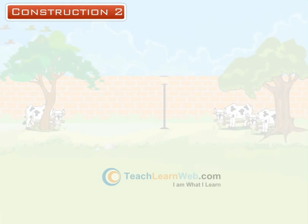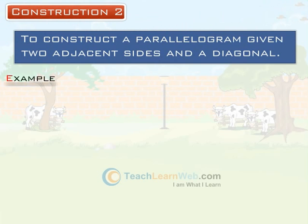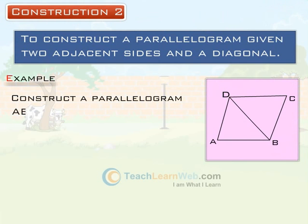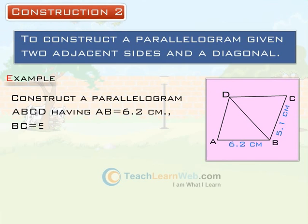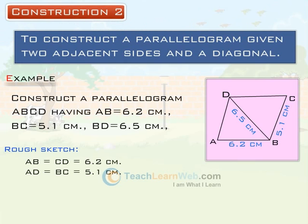Construction 2: To construct a parallelogram given two adjacent sides and a diagonal. Example: Construct a parallelogram ABCD having AB equals 6.2 cm, BC equals 5.1 cm, and BD equals 6.5 cm. In the rough sketch, AB equals CD equals 6.2 cm, AD equals BC equals 5.1 cm, and BD equals 6.5 cm.